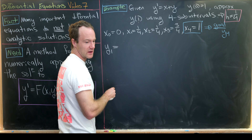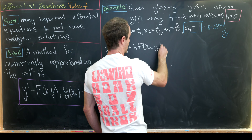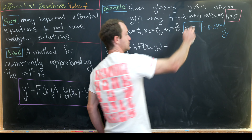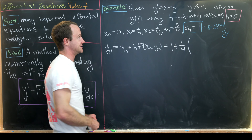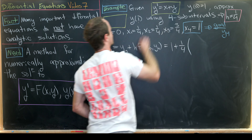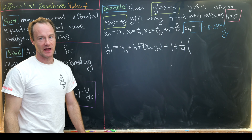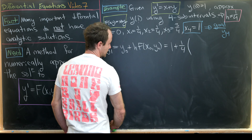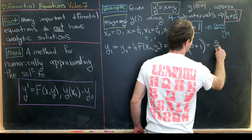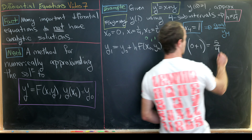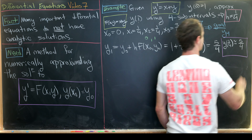First, compute y1 = y-naught + h·f(x-naught, y-naught). Since y-naught=1, h=1/4, and f(x,y)=x+y, we evaluate f(0,1) = 0+1 = 1. So y1 = 1 + (1/4)·1 = 5/4. Thus y(1/4) ≈ 5/4.